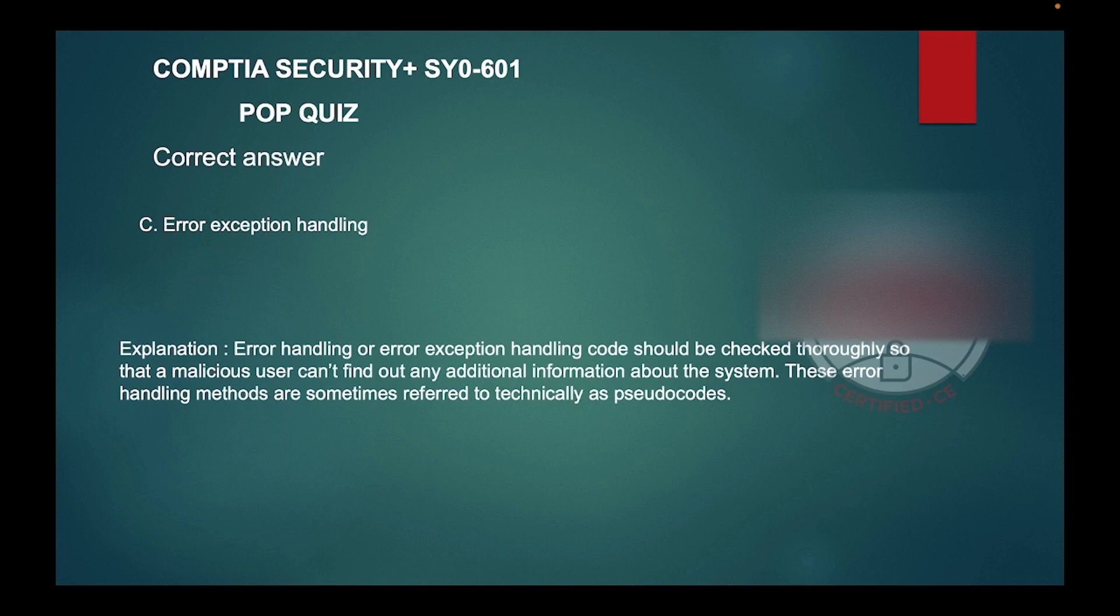The correct answer is C: Error exception handling. Error handling or error exception handling code should be checked thoroughly so that a malicious user can't find out any additional information about the system. These error handling methods are sometimes referred to technically as pseudocodes.